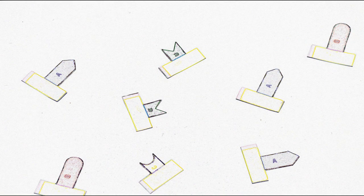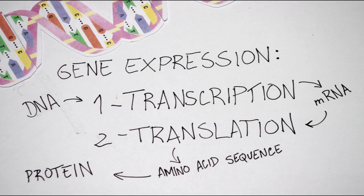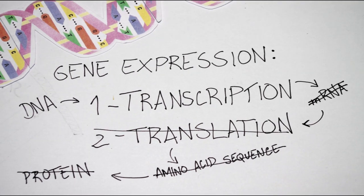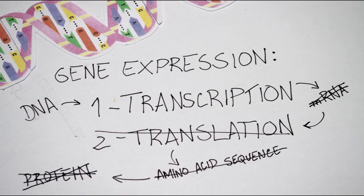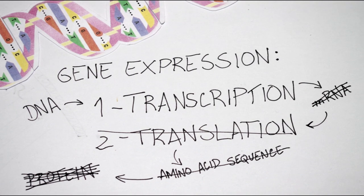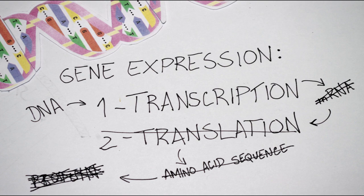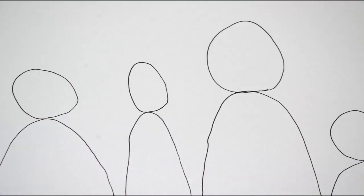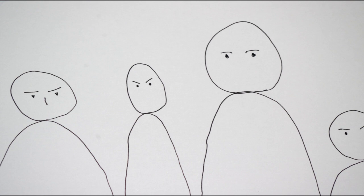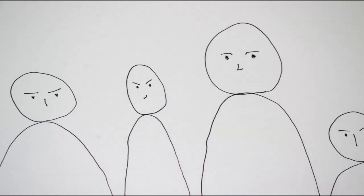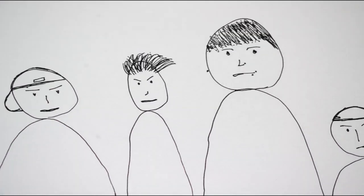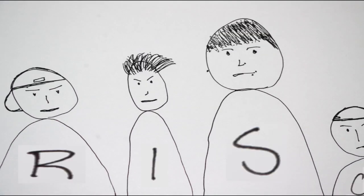With no mRNA, there is going to be no translation and a protein is not going to be produced. In our previous example, RISC could be a gang of bullies from the boy's class who chase him, steal and destroy the message, so that the instructions it contains cannot be completed.